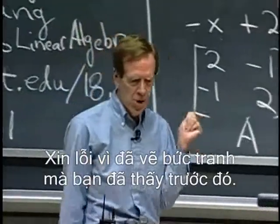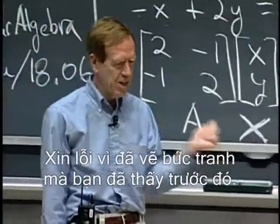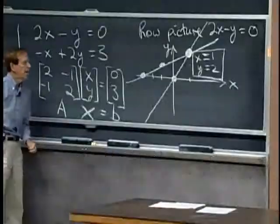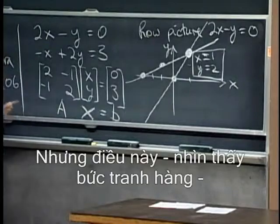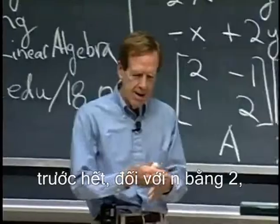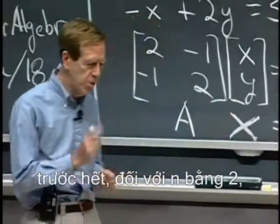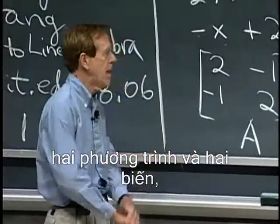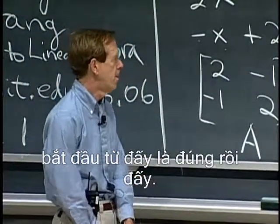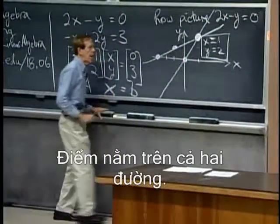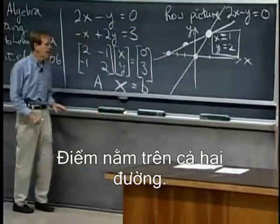Apologies for drawing this picture that you've seen before, but this is the row picture, first of all for n equal two — two equations and two unknowns — it's the right place to start. So we've got the solution, the point that lies on both lines.